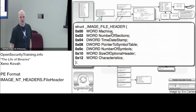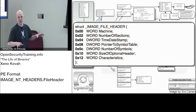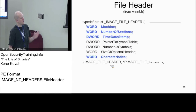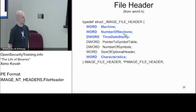The first round of our game is basically going to be going over DOS headers and file headers - just this information is all we're going to cover in the first round. The DOS header has two things you care about: signature and the pointer to the next header. For the file header, there's more stuff we care about: machine type, number of sections, time-date stamp, and characteristics. Some of these other things we don't really care about that much.